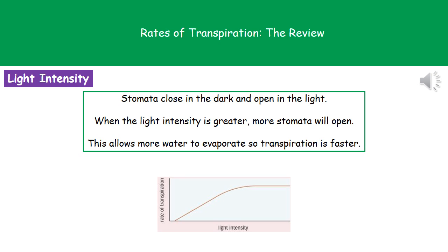Considering those factors in more detail, the first one is light intensity. What we actually find is that the stomata close in the dark and open in the light. So when we've got a greater light intensity, more stomata will be open. As a result of more stomata being open, we're going to be able to lose more water from inside our leaves to the surroundings, so transpiration will be faster. You can see that in the graph — as light intensity increases, the rate of transpiration increases.